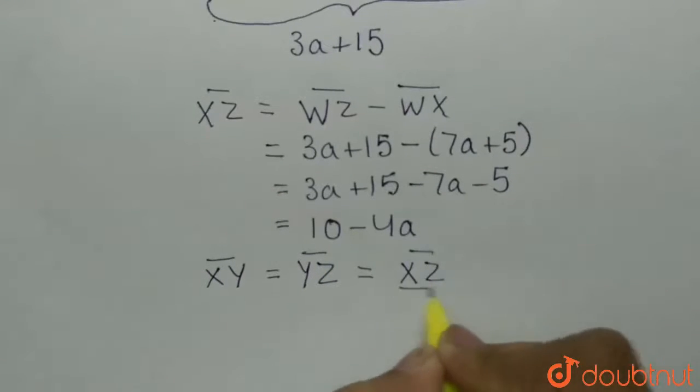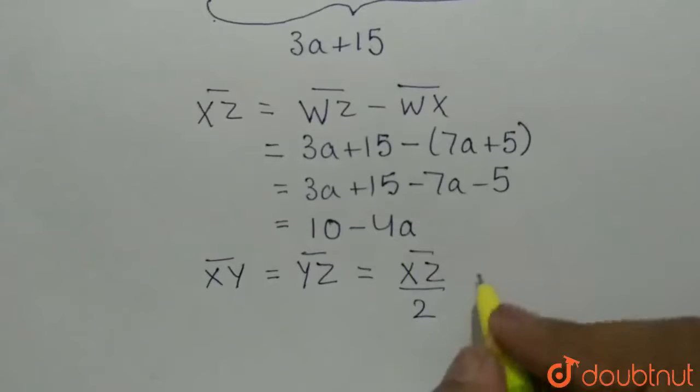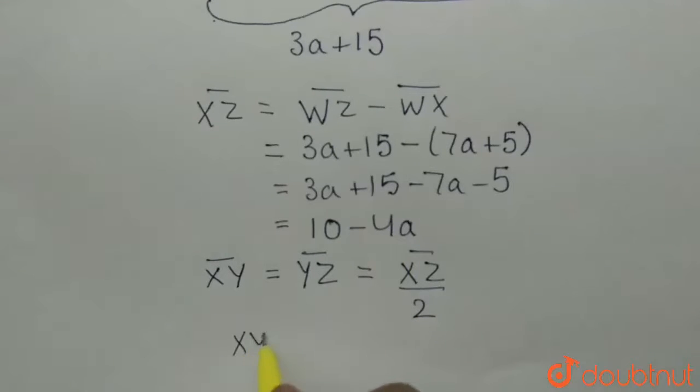So, XY is equal to 10 minus 4a, half, which is equal to 5 minus 2a.